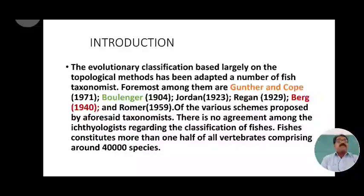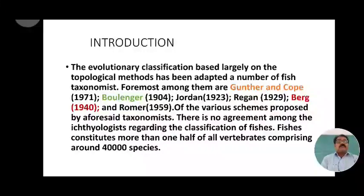Among all the scientists who proposed classification schemes, the few most widely used are those of Gunther, Hope, Bullinger, Jordan, Reagan, Berg, and Romer. These classifications are the most widely accepted and used for the study of fish.